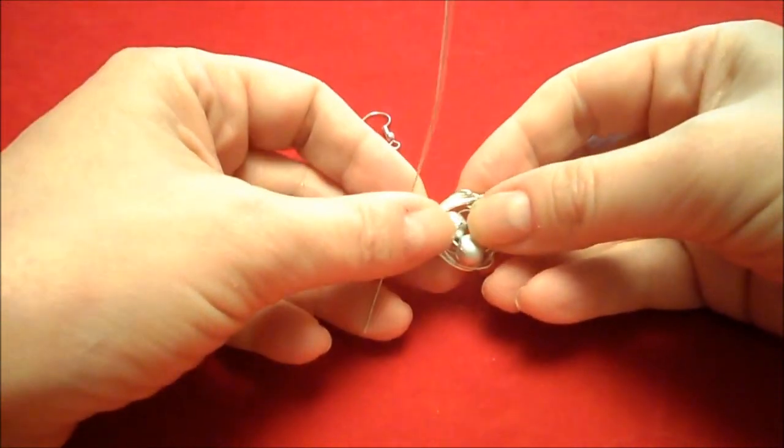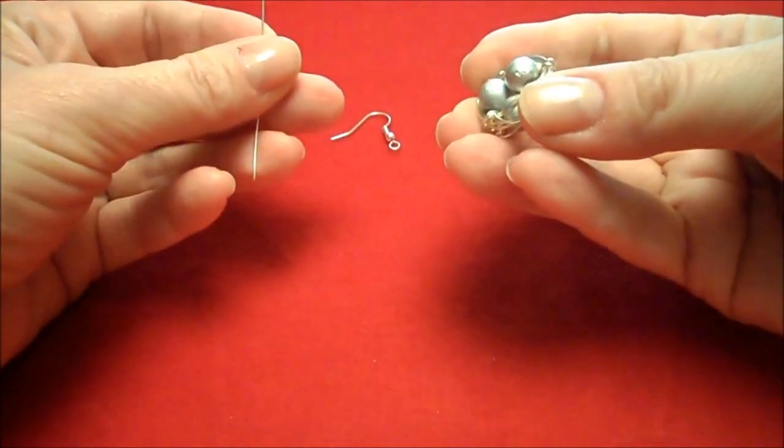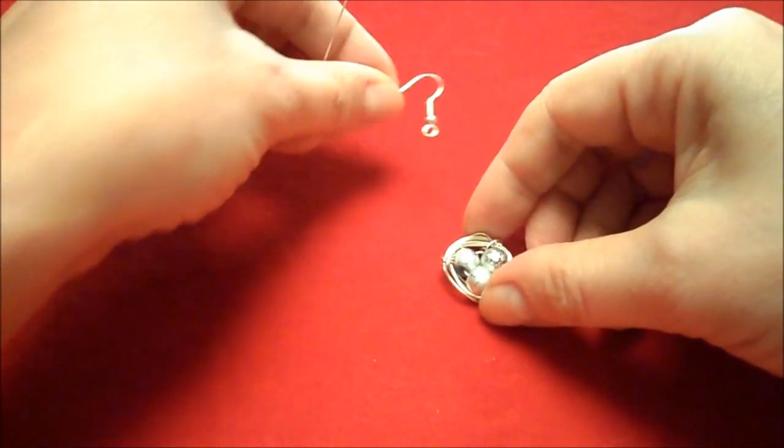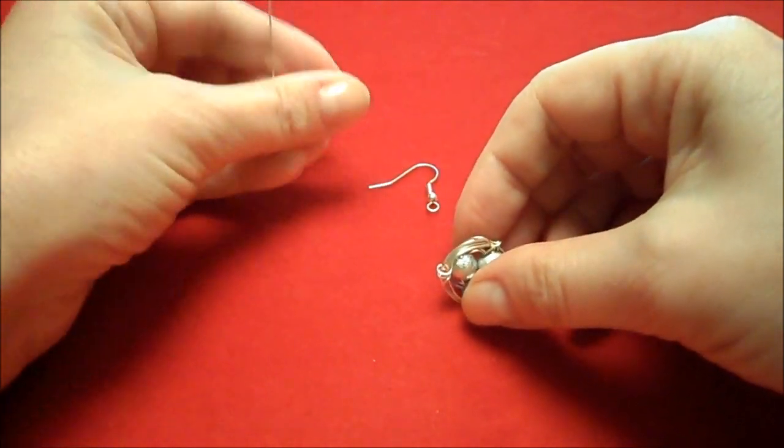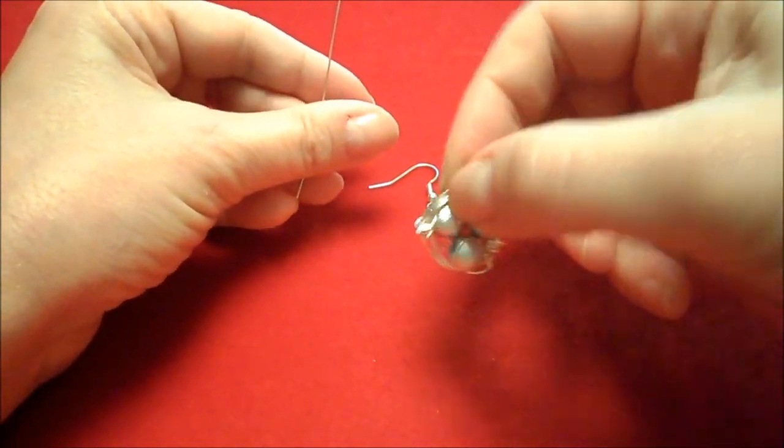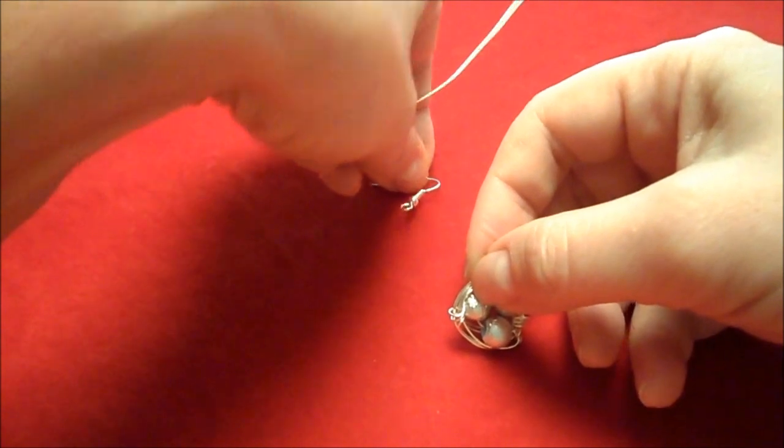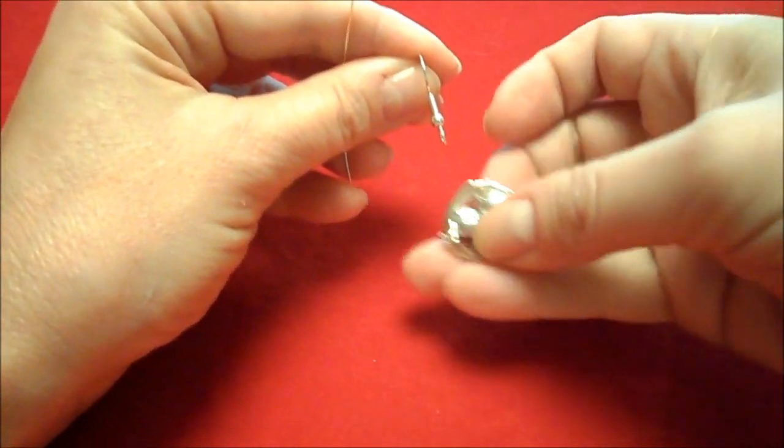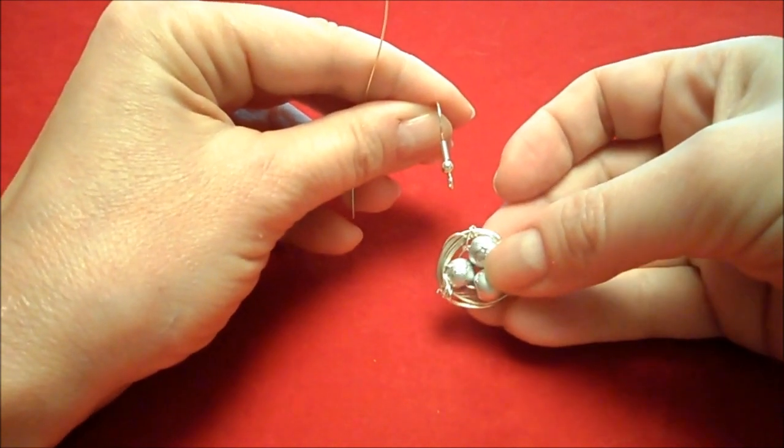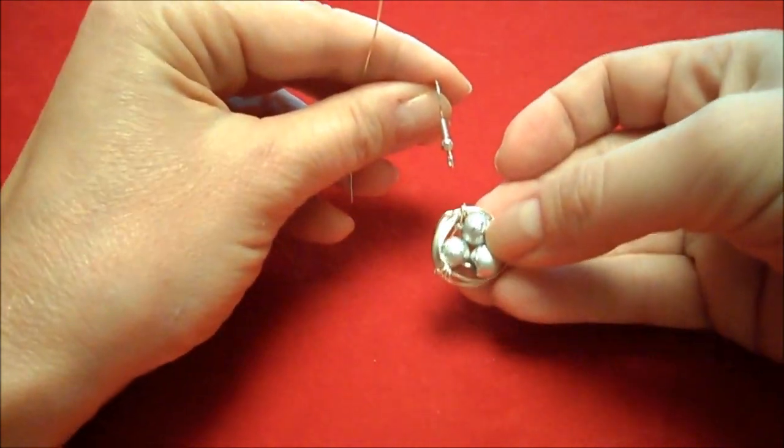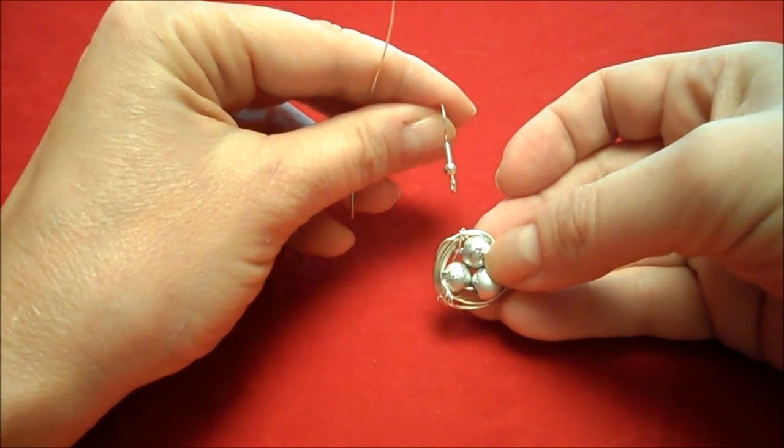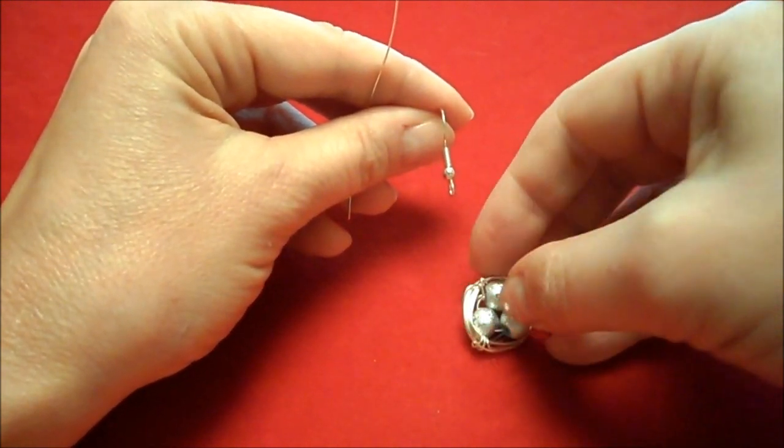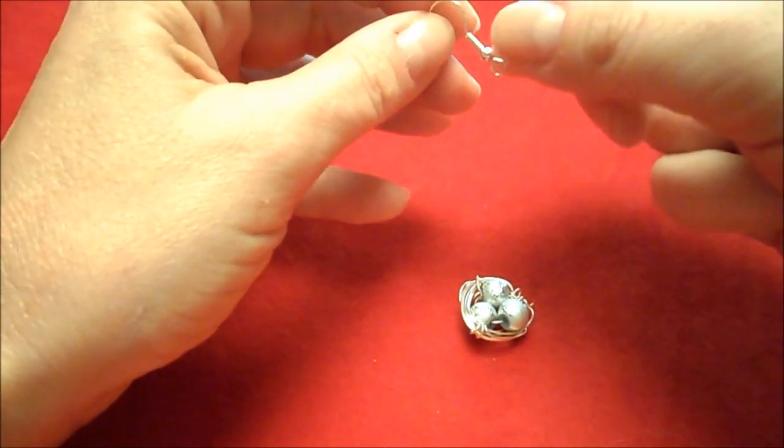Once we're complete with our little bird's nest, we want to turn it into an earring. You could use a jump ring and it would swing freely. But as you can see, this ear wire is this way. And I want the bird's nest to stay pretty stationary. So I'm going to make my own ear wire here.